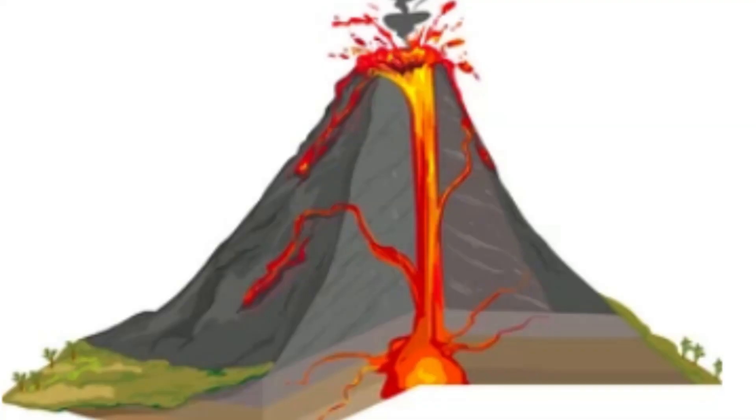Gas content. Magma contains dissolved gases, primarily water vapor, carbon dioxide, and sulfur dioxide. The gas content of magma depends on various factors, including magma composition and pressure. Higher gas content promotes explosive eruptions because as magma rises towards the surface, the decrease in pressure causes the gases to exsolve and form bubbles. The rapid expansion of these gas bubbles during an eruption leads to explosive fragmentation of magma.